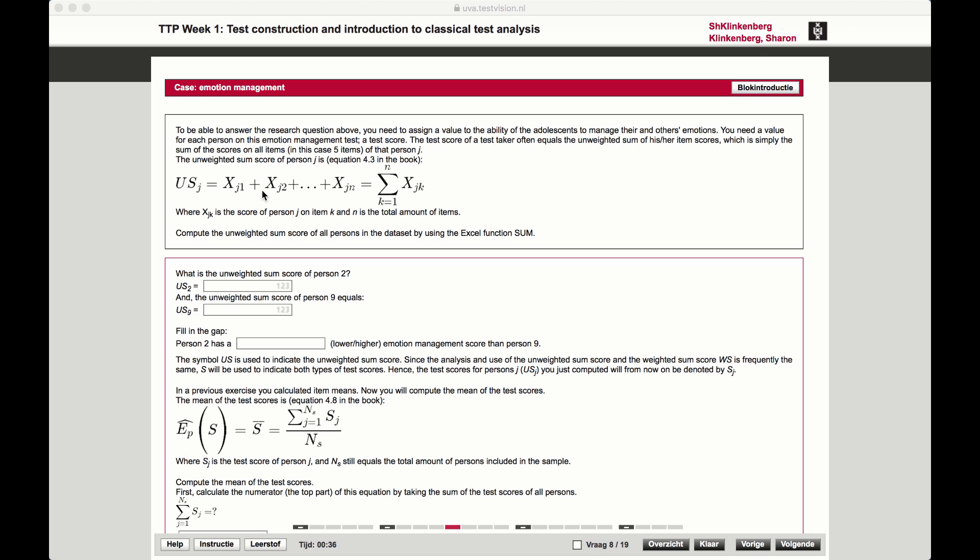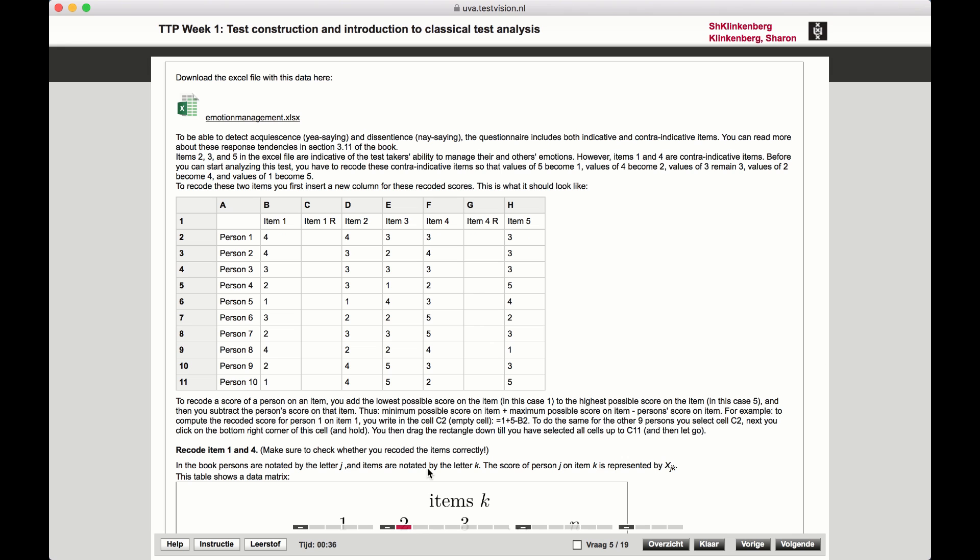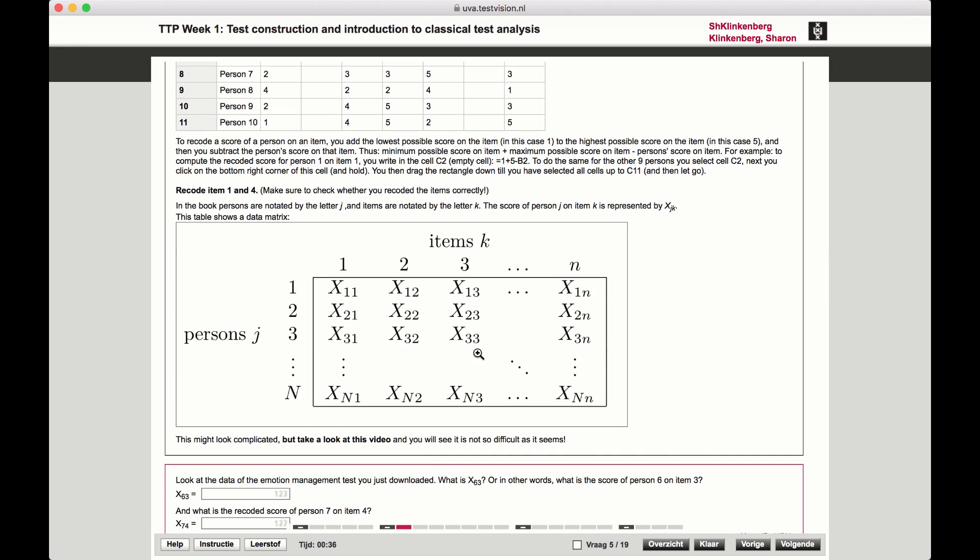This time we will choose a specific person J and add up all the items K. The notation here is that we are summing K1 until small letter n. If we go back to the matrix notation again, what this means is that we are choosing a specific J, let's say J1, and we're summing over K1 until K small letter n.